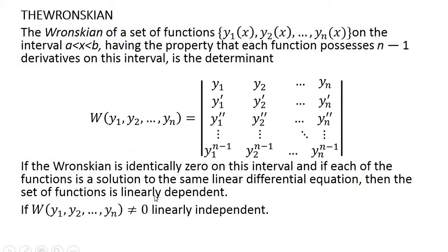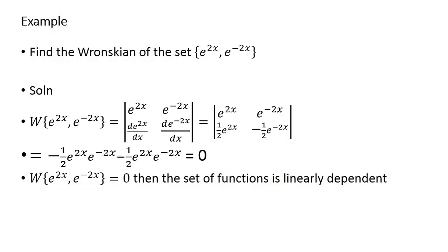Let's look at an example: find the Wronskian of this set. As you can see, there are two elements in the set, so you should compute n minus one derivative, which means one derivative since n is two.